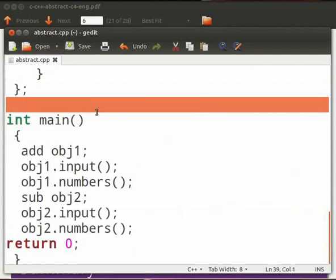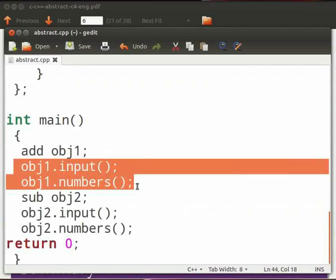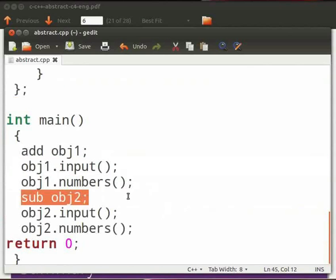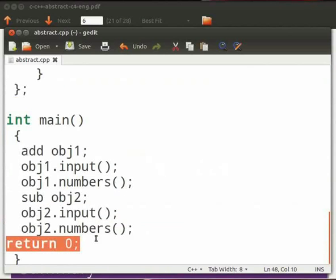This is our main function. Here we create an object of class add as obj1. Then we call both the functions input and numbers using the object obj1. Then we create another object of class sub as obj2. Again we call the two functions using the object obj2. And this is our return statement.